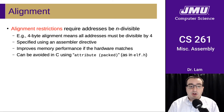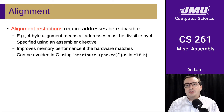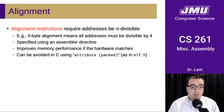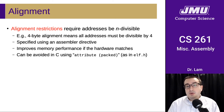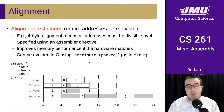An alignment restriction requires addresses of fields to be divisible by some number. For instance, four-byte alignment means that all addresses have to be divisible by four. It's not immediately apparent why this might be useful, but we'll see in the next module why we might care about this. We specify this using an assembler directive, and it can improve performance if the hardware matches. We can avoid this if we want to ensure there is no padding — that's what we do for the projects in this course — but in most cases we want alignment to be in place.